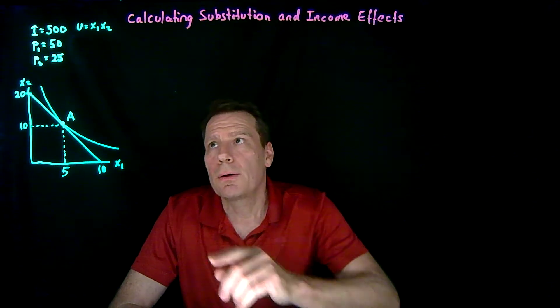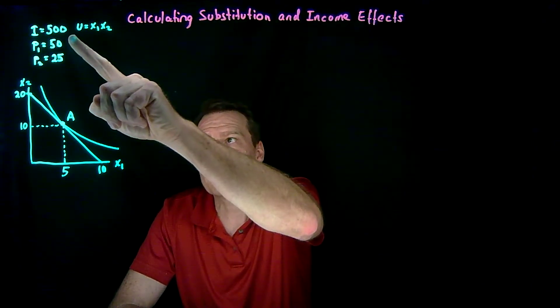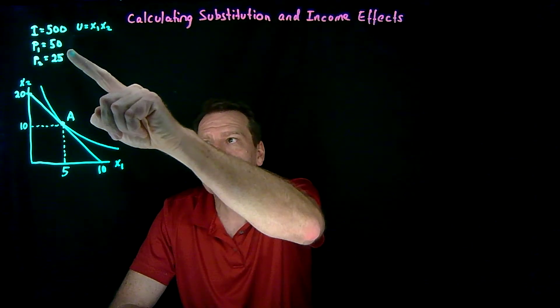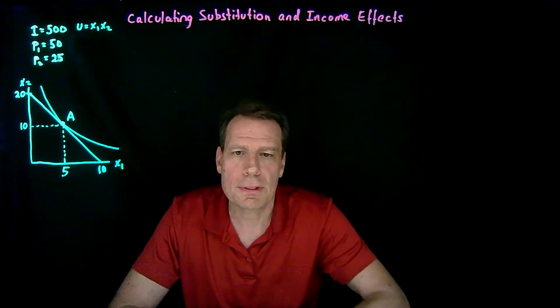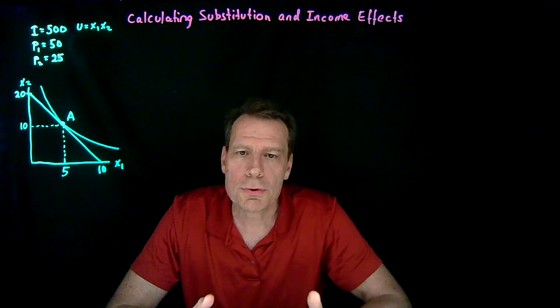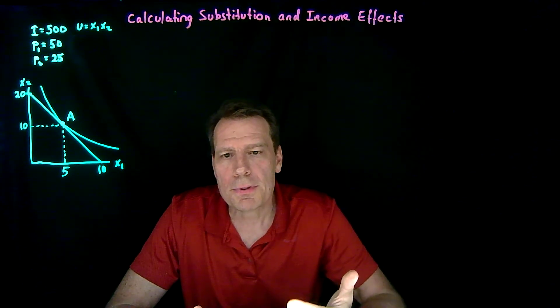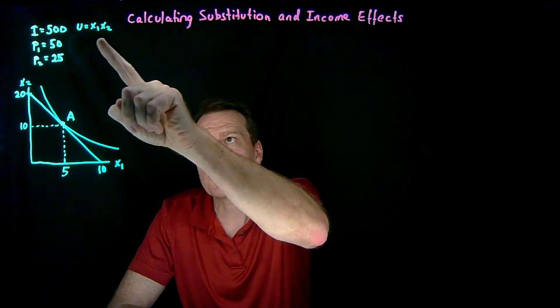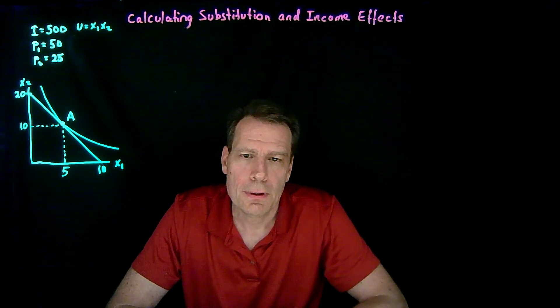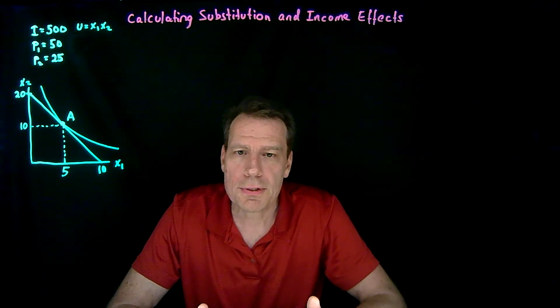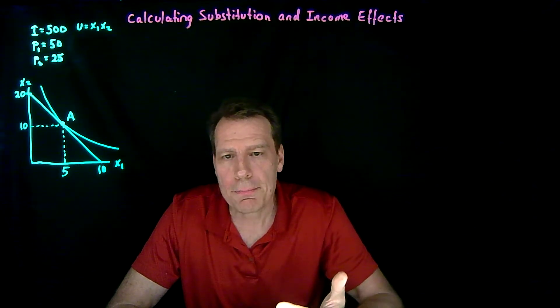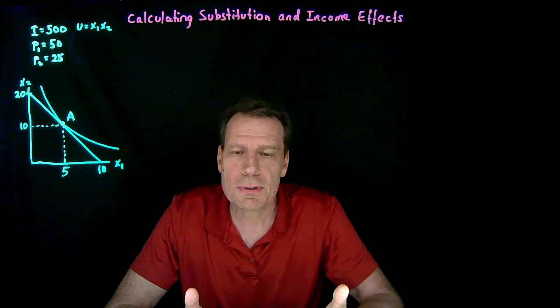We'll start with the example that we used when we first illustrated how to calculate an optimal consumption bundle for a consumer. In that example, we assume that income is 500, the price of good 1 is 50, and the price of good 2 is 25. We also assumed that the underlying map of indifference curves can be represented by the utility function x1 times x2. Of course, there are lots of other utility functions that could represent that same map of indifference curves, but this one's easy to work with.